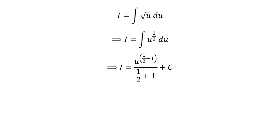The integration of u to the power half is u to the power half plus 1 upon half plus 1. So I is equal to u to the power half plus 1 upon half plus 1 plus capital C. Capital C is the arbitrary constant of indefinite integral. Do not forget to add this constant in the end of any indefinite integral.